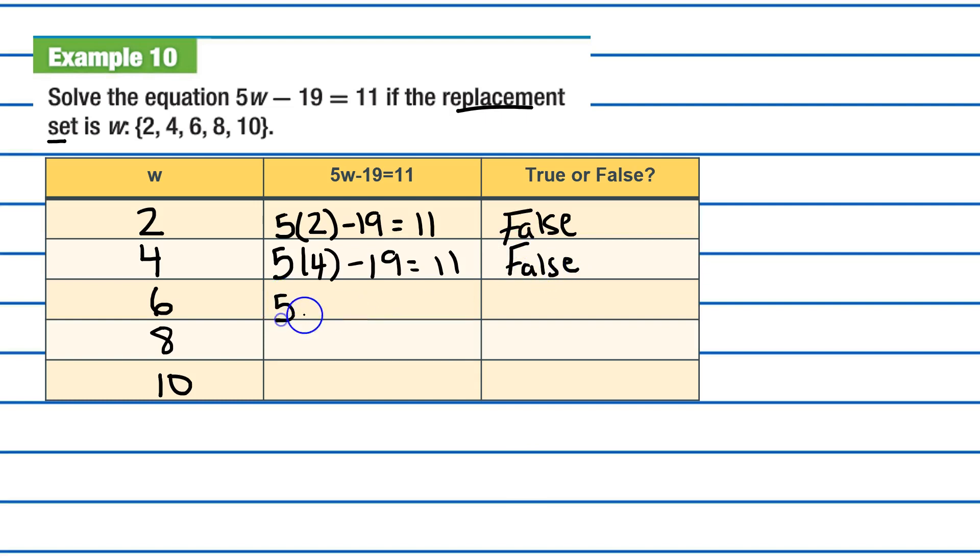So, let's try this next one. And, as you can see, we're going to keep on going, even after we have found a true one, because there could be more than one correct answer. 5 times 6 minus 19 is equal to 11. So, 30 minus 19 is equal to 11. The question is, is that true or false? Well, in this case, that one is true.